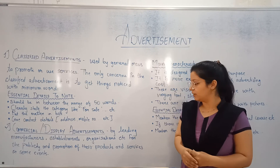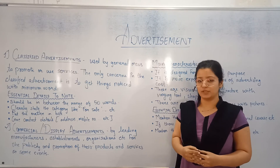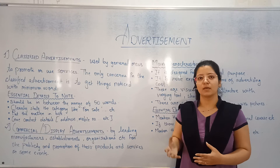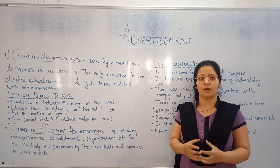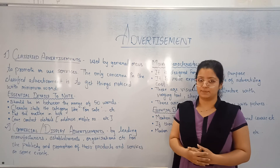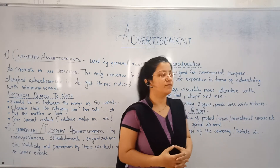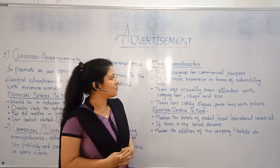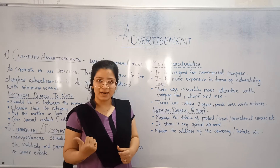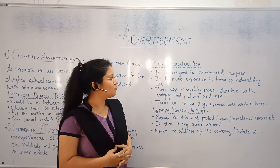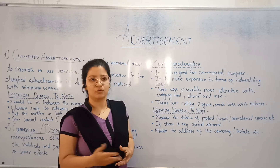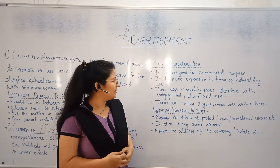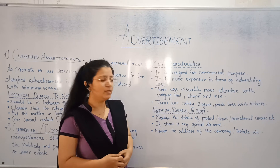Commercial or display advertisement is used by leading manufacturers, establishments, organizations, etc., for the publicity of their products, services, or events. Advertisements done on TV or in cinema fall under this type. It is designed for commercial purpose. It is more expensive in terms of advertising cost compared to classified advertisement. These are visually more attractive with important shape and size, and obviously more attractive compared to classified advertisement. There are catchy slogans and punchlines with pictures.